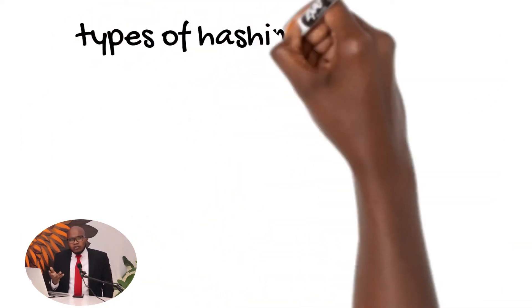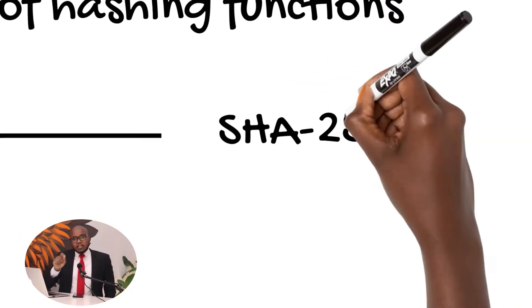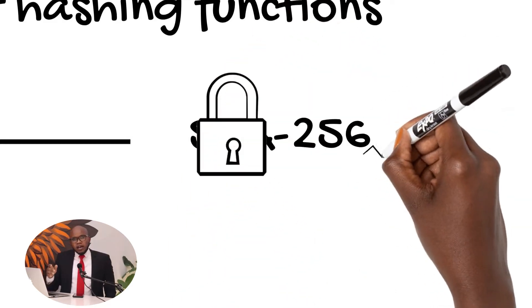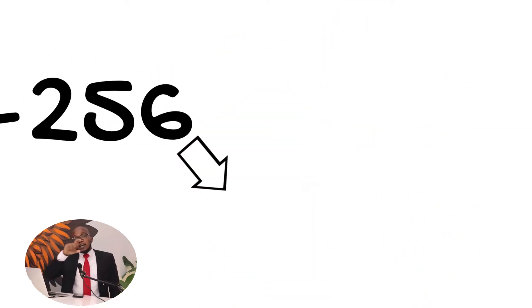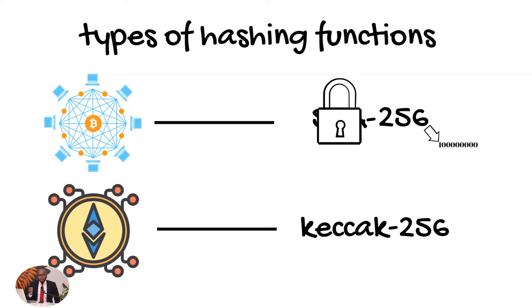The hash is a collection of numbers and letters that maybe for you you may not understand, but these devices, these computers understand how to read it. There are many types of hashing functions out there, like the Bitcoin blockchain uses the SHA-256. SHA stands for secured hashing algorithm, and 256 is the number of digits in ones and zeros that is going to spit out. For Ethereum it uses the Keccak-256.